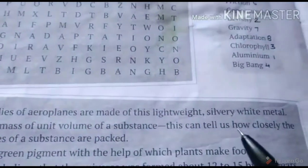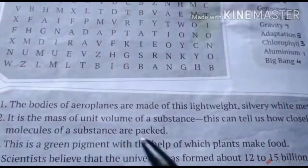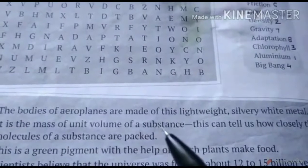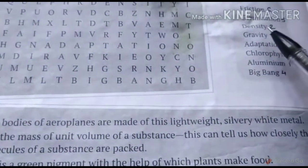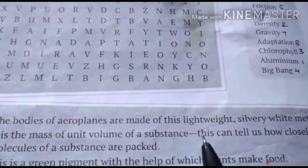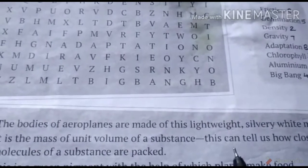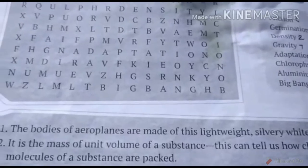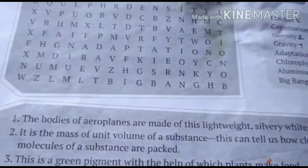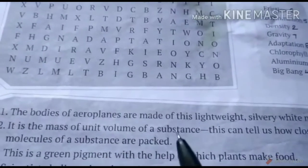Number two: it is the mass of unit volume of a substance. This can tell us how closely the molecules of a substance are packed. Kisi padhaar ki ikai aitan ka dravyaman hai jo kisi padhaar ke anuon ko pack karta hai. The right answer is density — the mass per unit volume of a substance is called density.